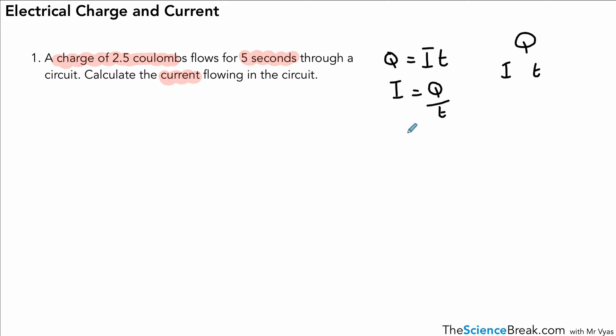And then it's just a question of substituting in the numbers. So we've got a charge of 2.5 coulombs, which comes from the question. And a time of 5. Do the equation. Works out as 0.5. It's a measure of current. So it's 0.5 amps. Hopefully not too difficult.